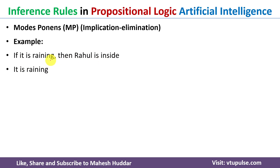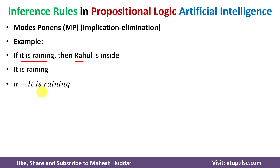We will convert these compound statements into simple primitive statements. The first statement has two primitives: 'it is raining' and 'Rahul is inside.' The second statement also uses 'it is raining.' So we have two primitive statements: alpha is 'it is raining' and beta is 'Rahul is inside.'